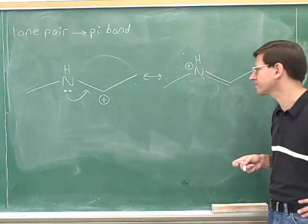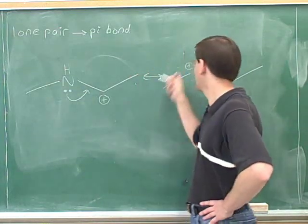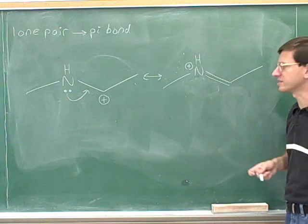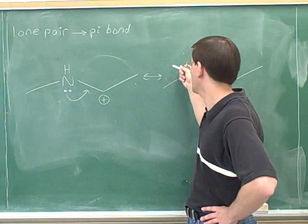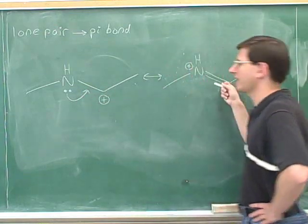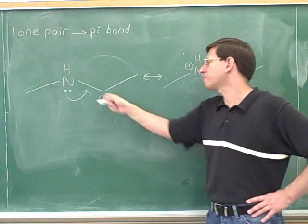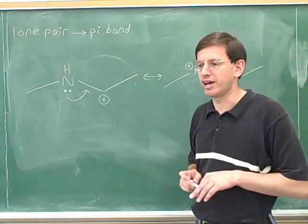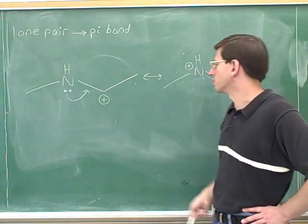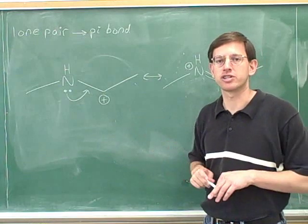Notice that the nitrogen started neutral and became positive, while the carbon started positive and gained electrons, becoming neutral. When moving electrons in resonance, we always move in units of one step: from neutral to positive, or from positive to neutral. You would never go from a positive charge directly to a negative charge — that's too big a leap. Each arrow moves the charge just one step at a time.